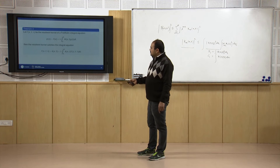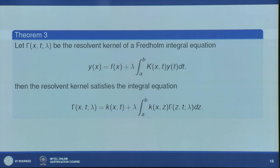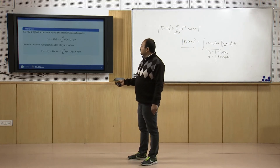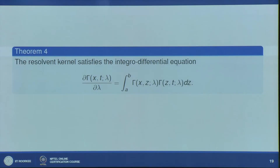There is one more important theorem: the resolvent kernel γ(x,t,λ) satisfies the integral equation γ(x,t,λ) = k(x,t) + λ ∫_a^b k(x,z) γ(z,t,λ) dz, which is known as the Fredholm identity. Additionally, γ(x,t,λ) satisfies an integro-differential equation, where the derivative of γ with respect to λ is given in terms of an integral equation.